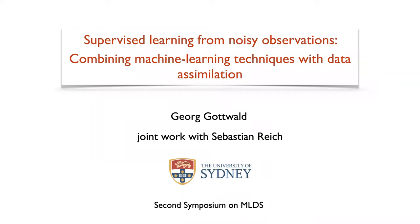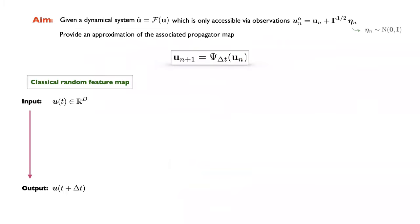I'd like to present some recent results obtained with Sebastian Reich on supervised learning from noisy observations. The general objective is: we're given a dynamical system u-dot = f(u), but we only have information through observations at discrete times t_n, contaminated by Gaussian noise. Associated with the flow is a propagator map psi for a time step delta-t. The objective is to find a surrogate model for this propagator, learned just from observations.